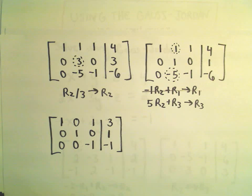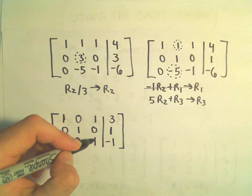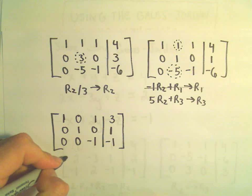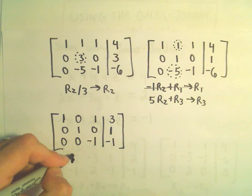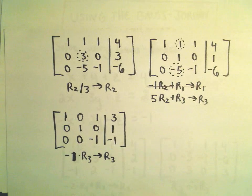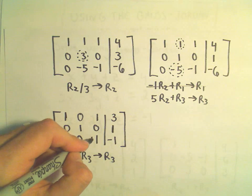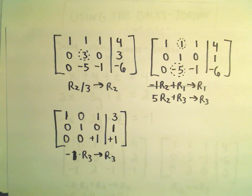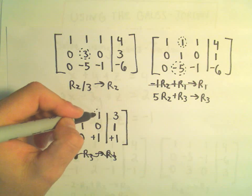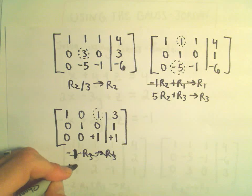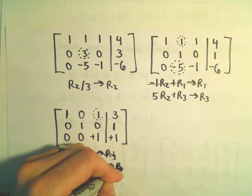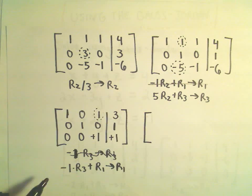Next we want to make the negative 1 in row 3 into a positive 1, so we take negative 1 times row 3 to get our new row 3. That will make those entries positive. Then I'm going to take negative 1 times row 3 and add that to row 1 to get my new row 1, and then we'll have our solution.